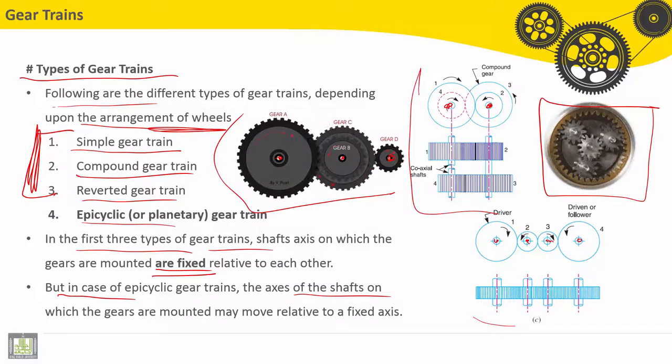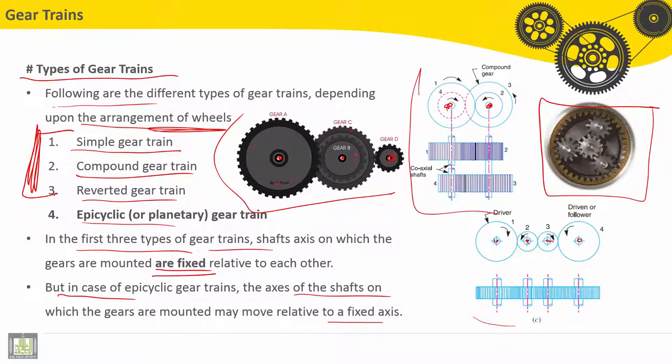You can see here this axis is moving and rotating. This one also is rotating. This one also is rotating. This one also is rotating. So three gear axes here are moving and rotating around this fixed axis.